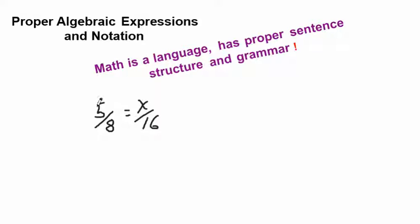So, this is a sentence. 5 parts out of 8 is some part out of 16. This is a proper sentence. Don't then stick another equal sign here and say it's 10. Don't tell me that 5 eighths is the same as some part of 16, which is 10. That's like saying that 5 eighths is 10. That doesn't make sense.